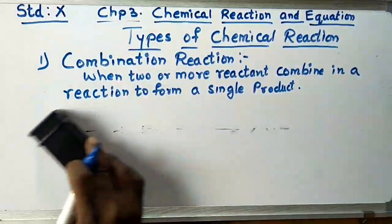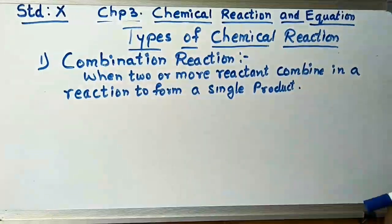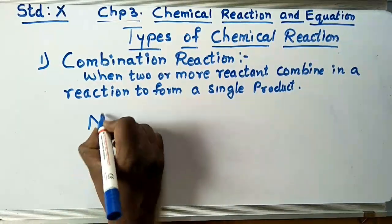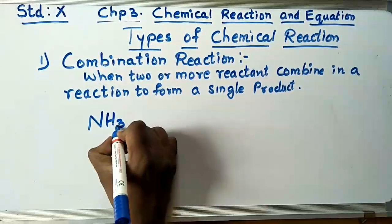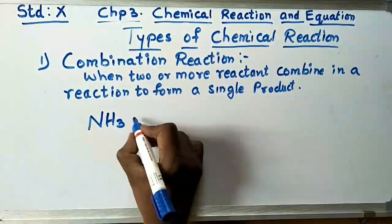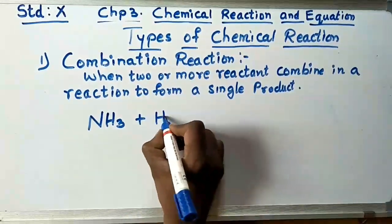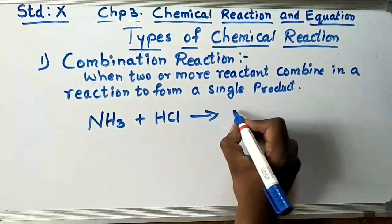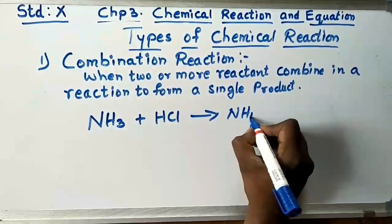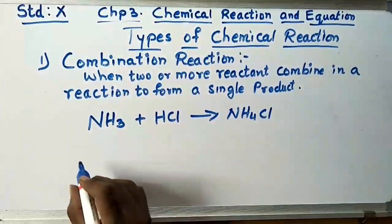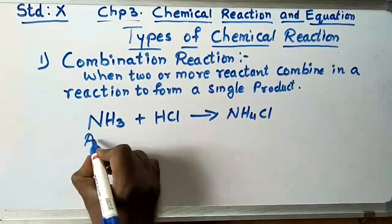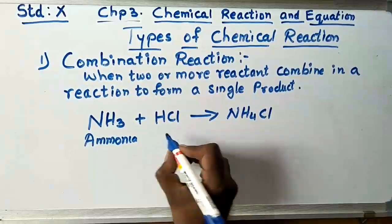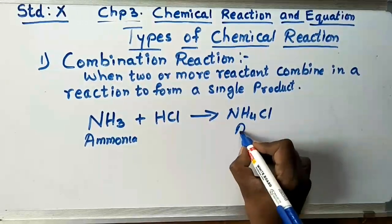Let us take some examples. NH3 is ammonia and HCl is hydrochloric acid. They combine to form NH4Cl, which is ammonium chloride — this is a combination reaction.